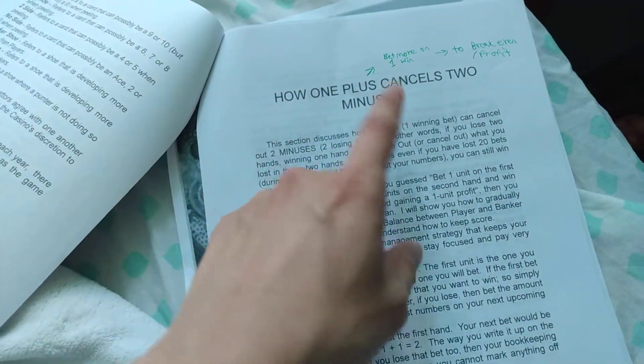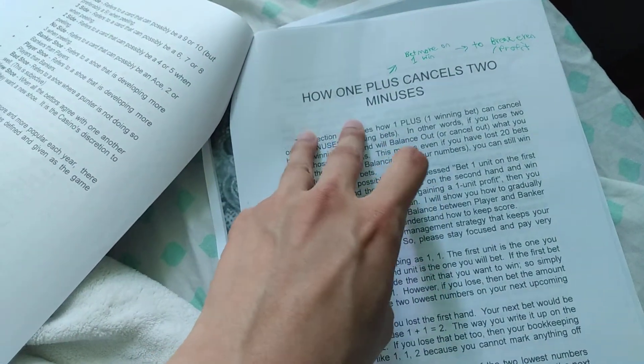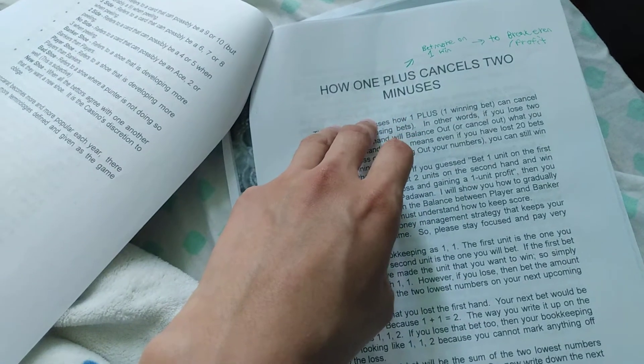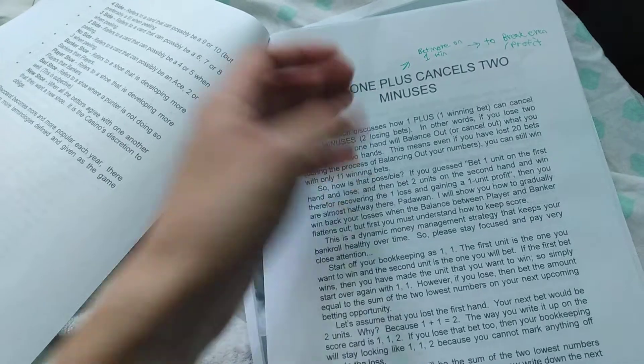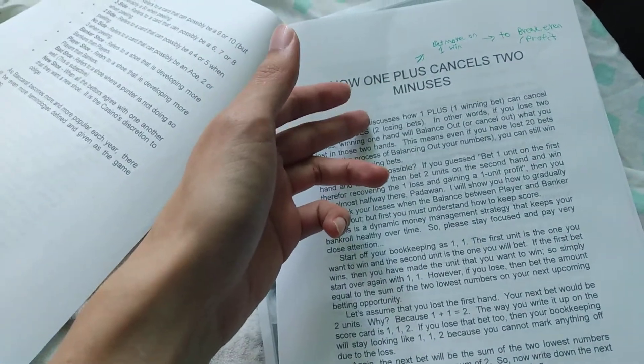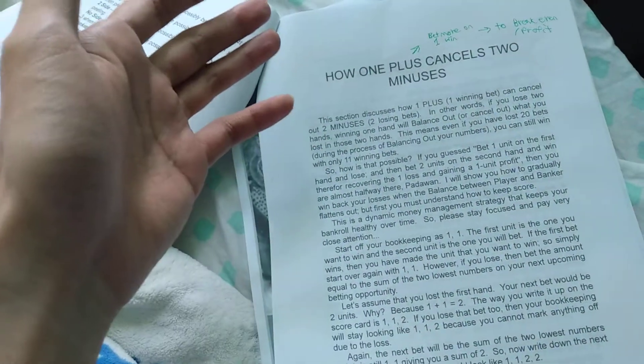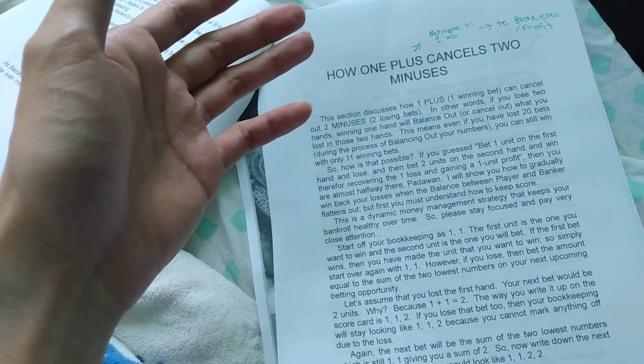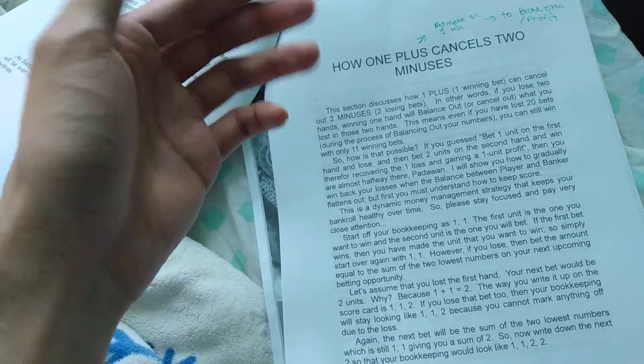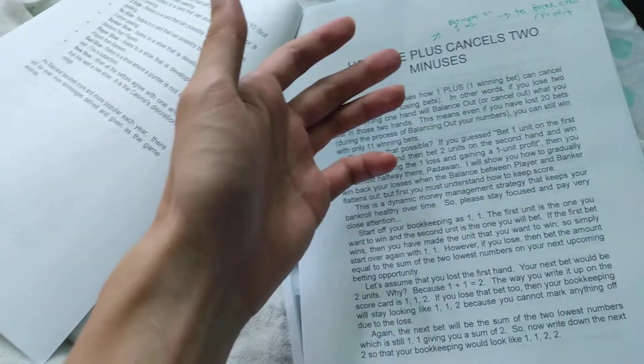When it's talking about how one plus cancels two minus. What it means is the betting system. Okay, let's say you lost two bets, $10 each. That's $20, right? So in order for you to gain, win the bets, you want to bet at least like $20 or more on your third bet. And if you win, you win it. Then you have a low profit or breakeven, depending on how you bet. And if you lose, one plus cancels a two minus. Not possible.